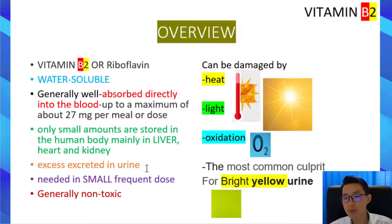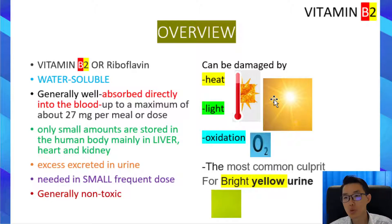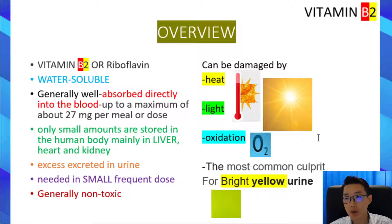Vitamin B2 is generally non-toxic. Just like other water-soluble vitamins, vitamin B2 can be damaged by heat, light, and oxidation. As a side note, vitamin B2 is the most common culprit for the bright yellow urine that we produce after taking a multivitamin.